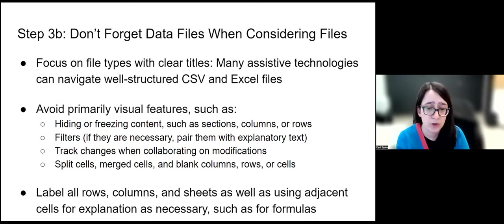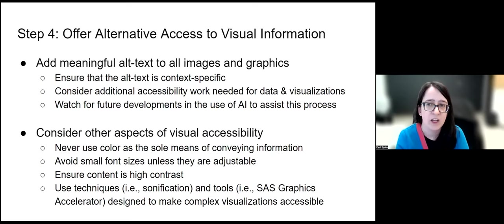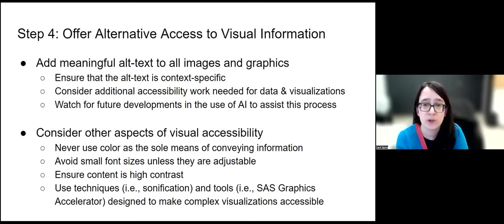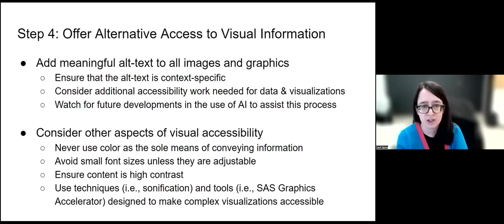You need to label all rows, columns, and sheets, and use adjacent cells for explanation as necessary — for example, a cell next to a formula could offer a further explanation. You also want to offer an alternative way of accessing any visual information. Alt text is how you describe images using text — not visually apparent on the website or in the document, but available to a screen reader. When creating documents, any images, graphs, or other visuals need alt text that is context-specific, which is one of the reasons it's so hard to automate this process.